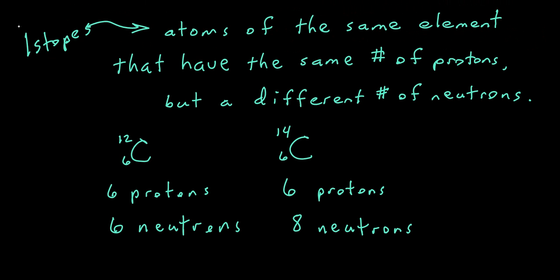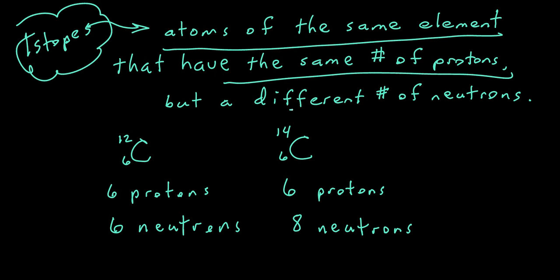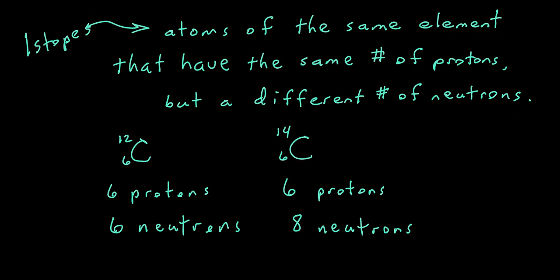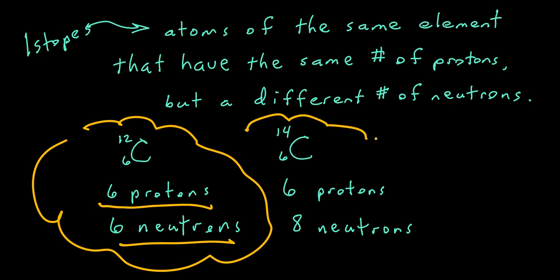We learned about the concept of isotopes — that isotopes are atoms of the same element with the same number of protons but a different number of neutrons. Some examples would be the carbon-12 atom, which has six protons and six neutrons, and an isotope of carbon-12,